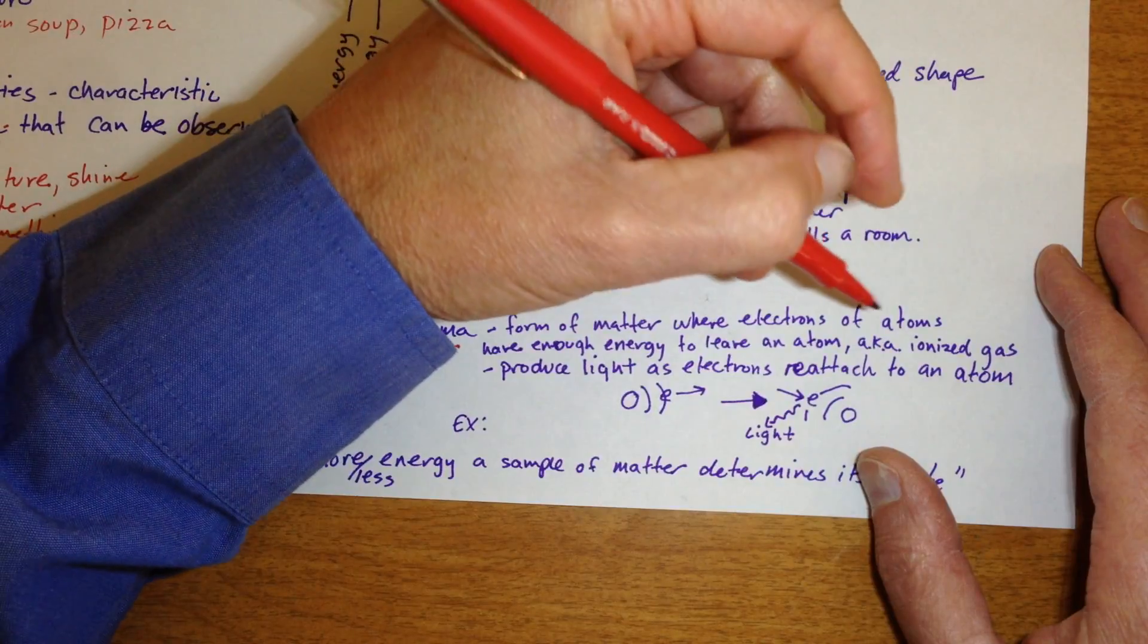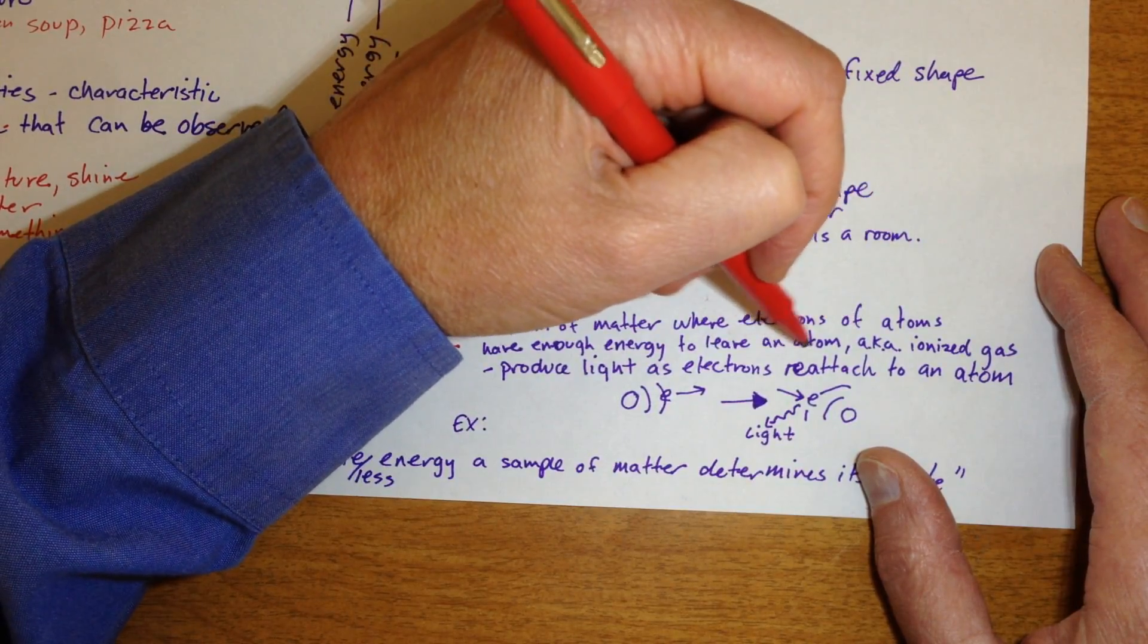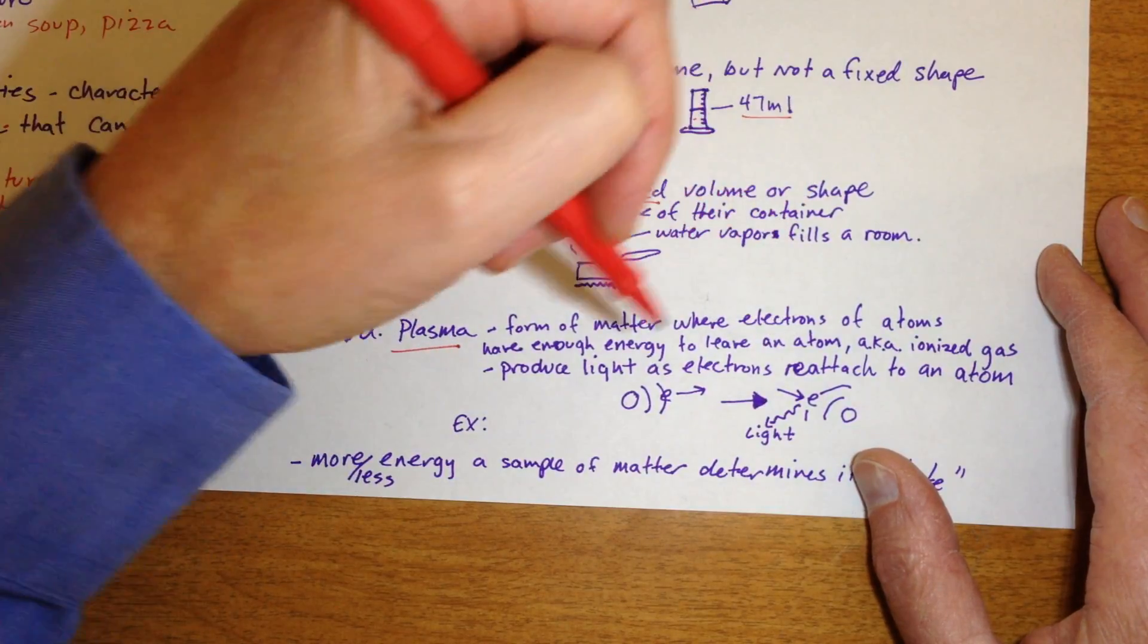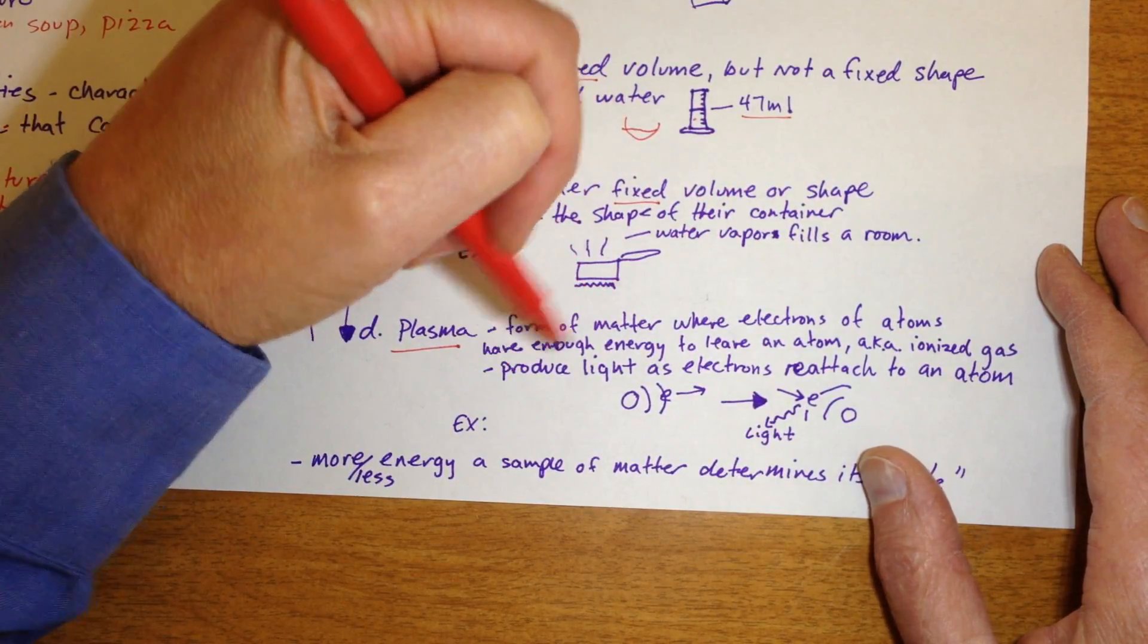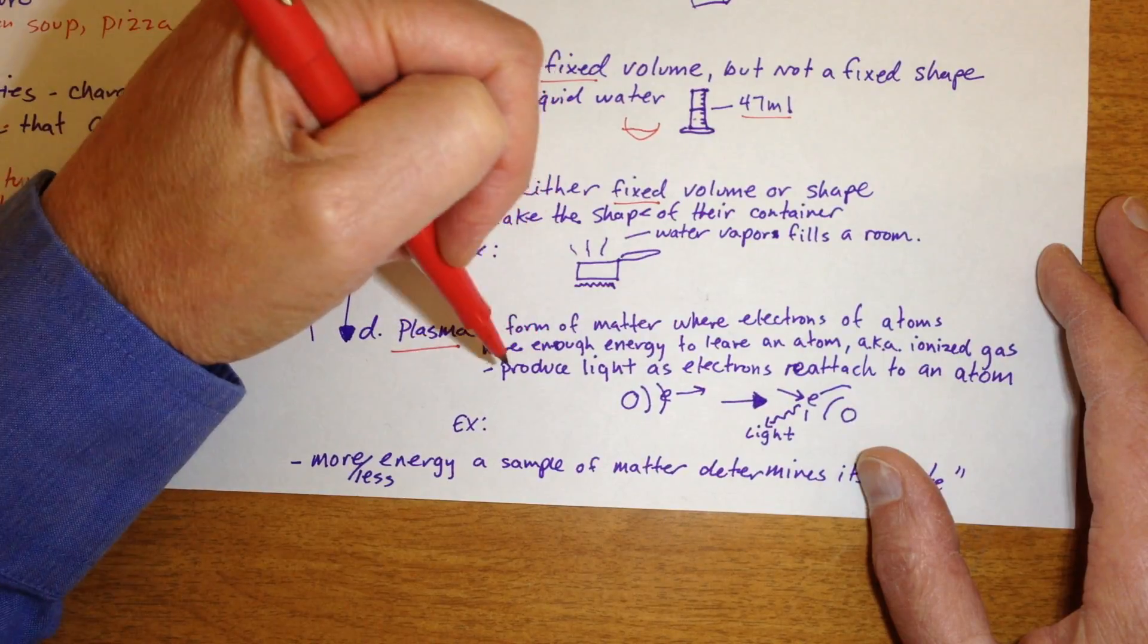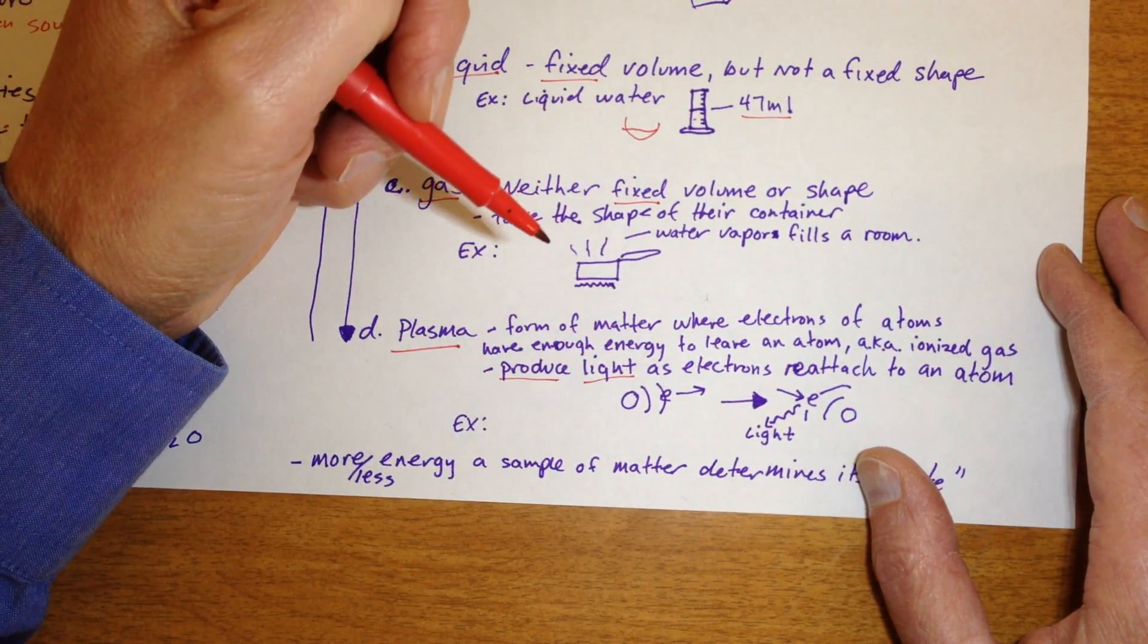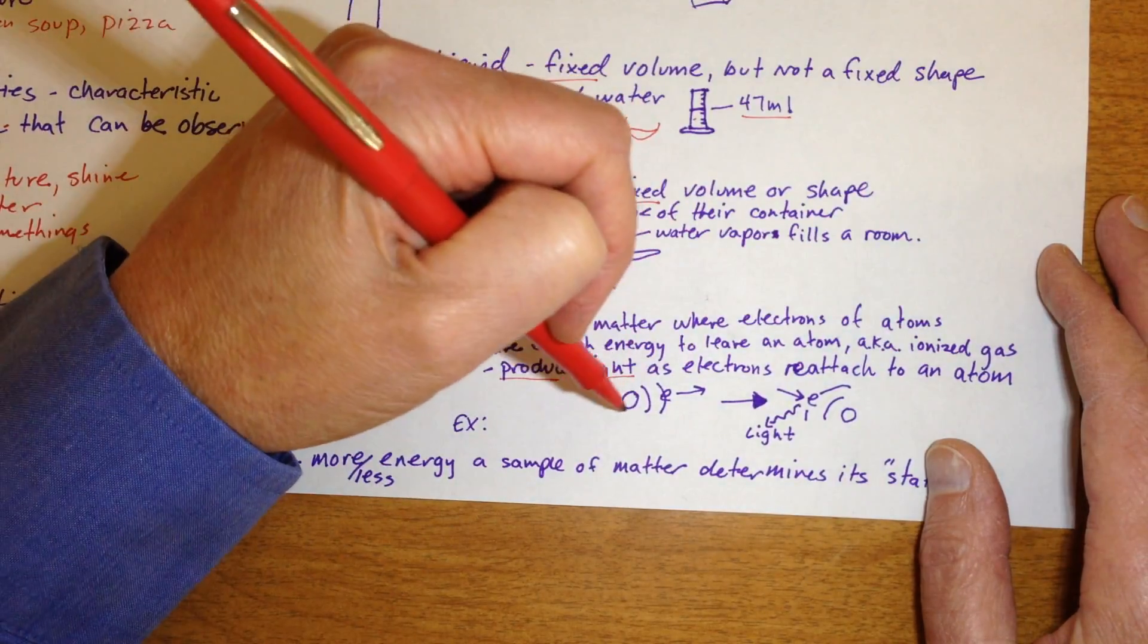It's also called an ionized gas. So electrons can actually come off the atom that they're normally attached to temporarily, permanently. Sometimes, when the electrons kind of cool down a little bit, they can reconnect with an atom. And when they do that, they actually produce light. So it says produce light as electrons reattach to an atom.